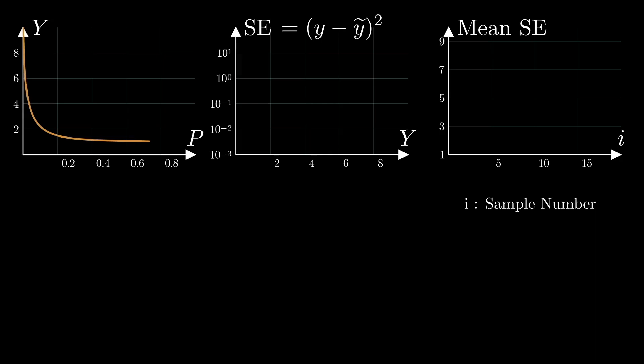What will the error be if I decide to submit y tilde equal to, for example, 1.5, the dashed line, and the true value y turns out to be, for example, the red dot. Again, what will my error be if y tilde, the dashed line, is submitted, and the true value y turns out to be the red dot.